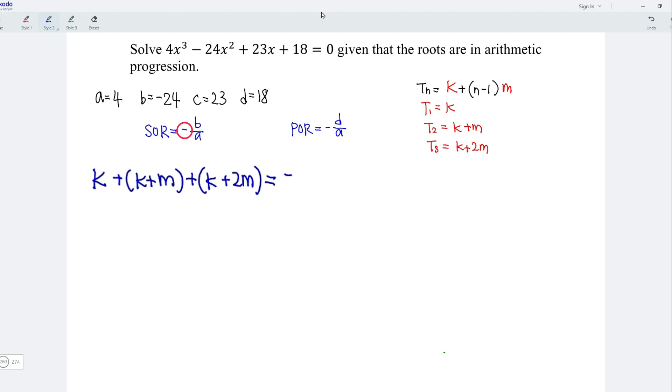Which means that if we take the first term plus the second term plus the third term, we should obtain negative negative 24 over 4. Simplify, we should obtain 3K plus 3M is equal to 6.